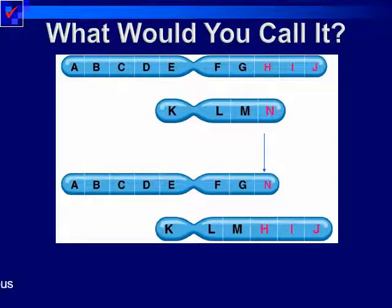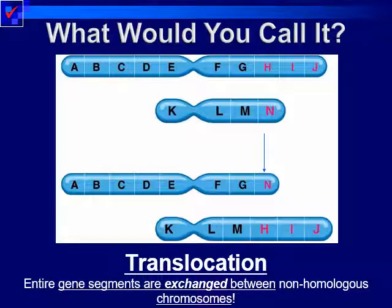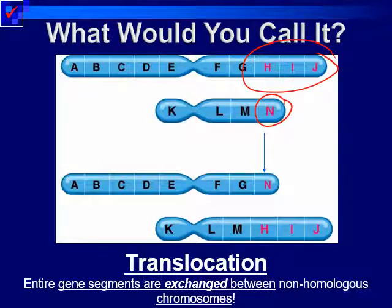The final type we're going to discuss is called translocation. These are genes or chromosomes for two different traits. After the mutation, N went from the lower chromosome up to the top, and H, I, J went from the top chromosome down to the lower. What happened is chromosomes not coding for the same trait exchanged bits of information. Hypothetically, if the top one was for blonde hair and the lower was for blue eyes, after the mutation you'd end up with blue hair and blonde eyes — an oversimplification, but you get the gist.